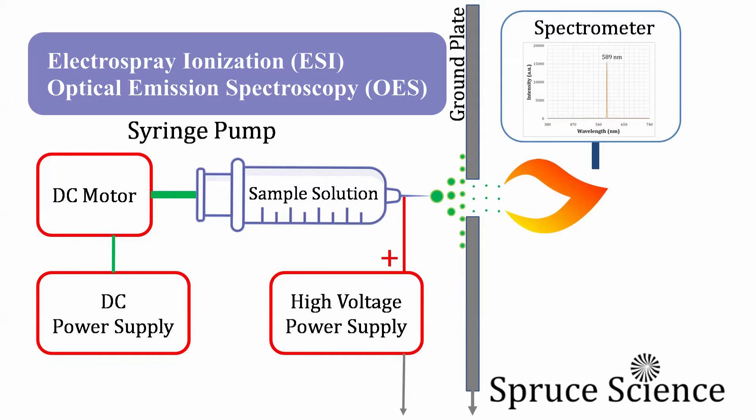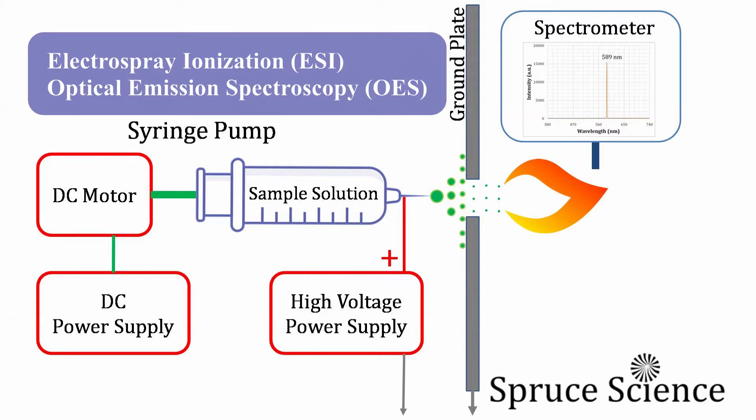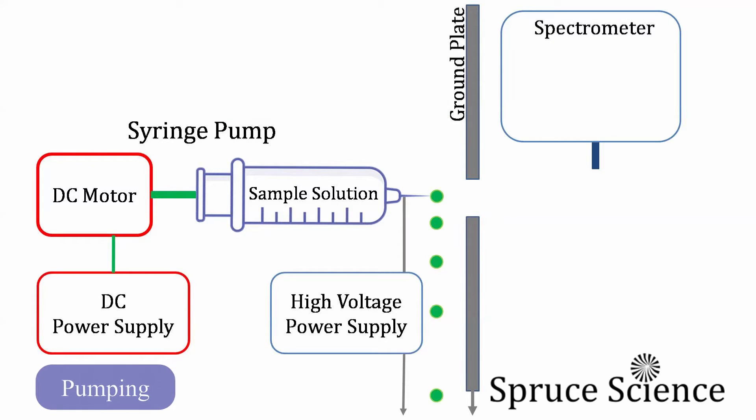Let me explain a little more about this two-step process using the schematic illustration you now see on the screen. The left side of the ground plate is where electrospray ionization takes place. The sample solution is loaded inside a syringe pump and a DC motor slowly pushes the liquid through the needle.